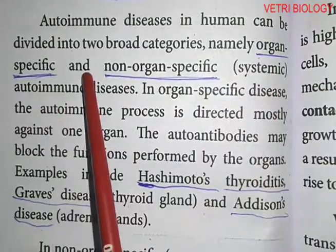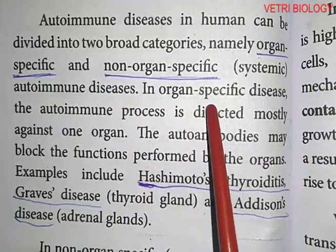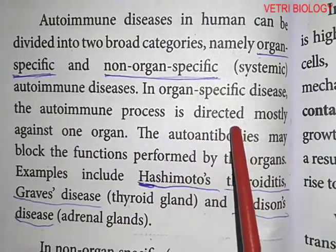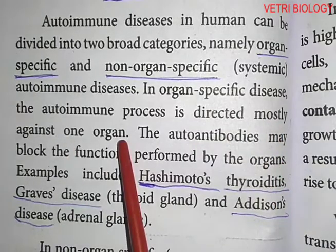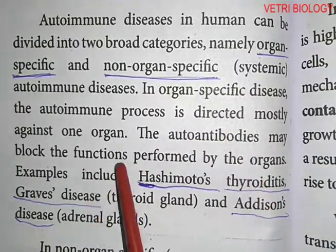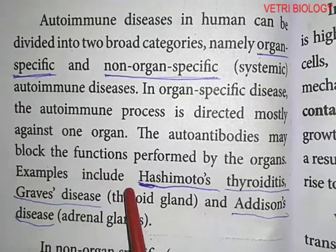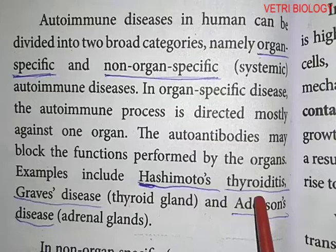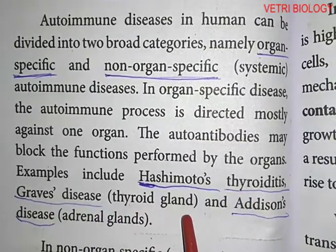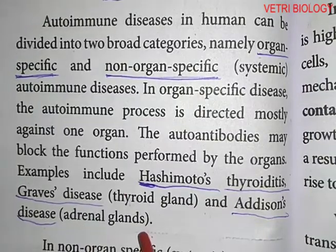In organ-specific disease, the autoimmune process is directed mostly against one organ. The autoantibodies may block the functions performed by the organ. Examples include Hashimoto's thyroiditis, Graves' disease affecting the thyroid gland, and Addison's disease affecting the adrenal glands.